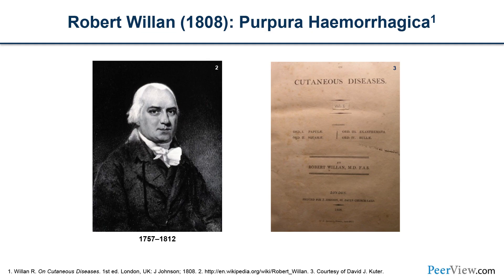I'll start with a case — a rather old one. This is Robert Willen, a cherubic Yorkshireman who, back in 1808, published a book called 'On Cutaneous Diseases.' He described a condition called purpura hemorrhagica, which is the first English description of ITP, though ITP had been described in the 18th century by others in other languages.